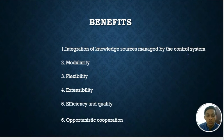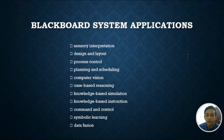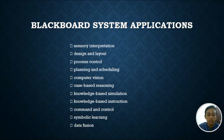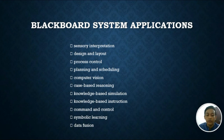Next we look at some applications of the blackboard system. These include sensory interpretation, design and layout, process control, planning and scheduling, computer vision, case-based reasoning, knowledge-based simulation, knowledge-based instruction, command and control, symbolic learning, and data fusion. Blackboard systems are mostly used in locomotion, data interpretation, and environmental change monitoring. Examples include a blackboard system for interpreting agent messages, a mobile robot for corridor navigation, a distributed blackboard architecture for interactive data visualization, and blackboard systems for web applications.